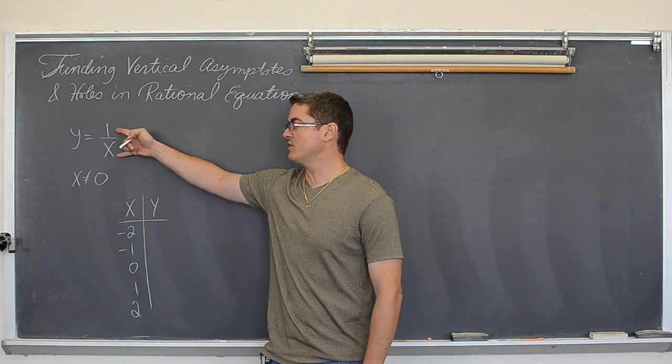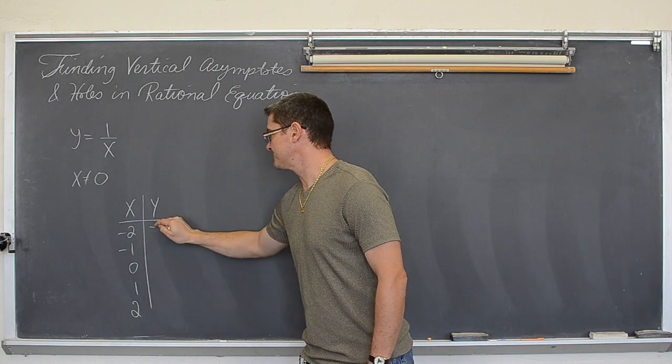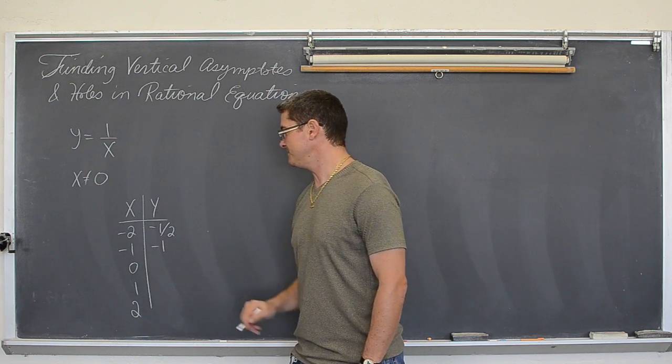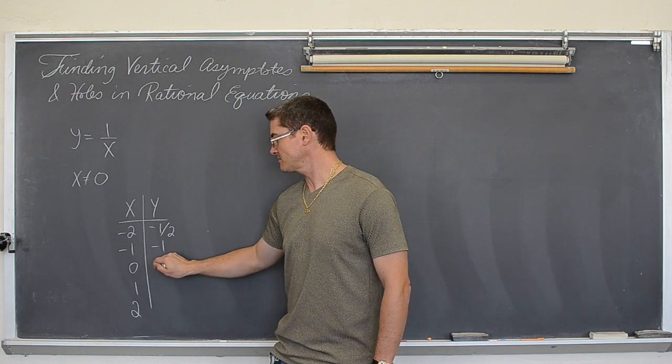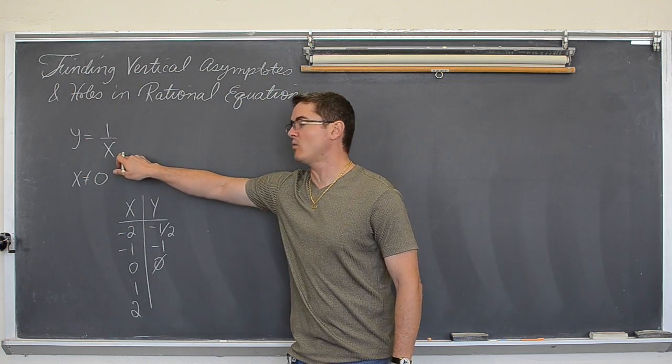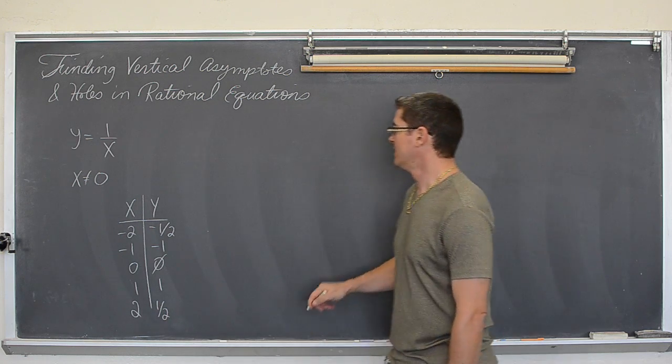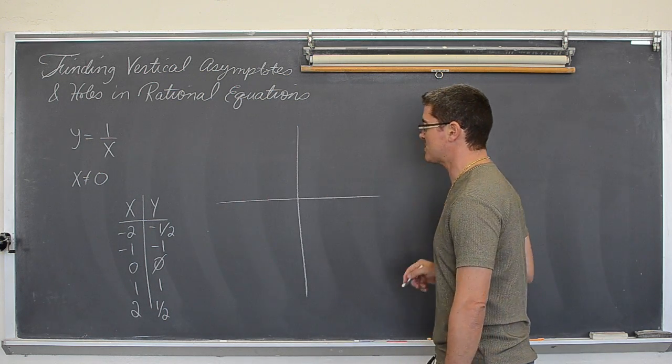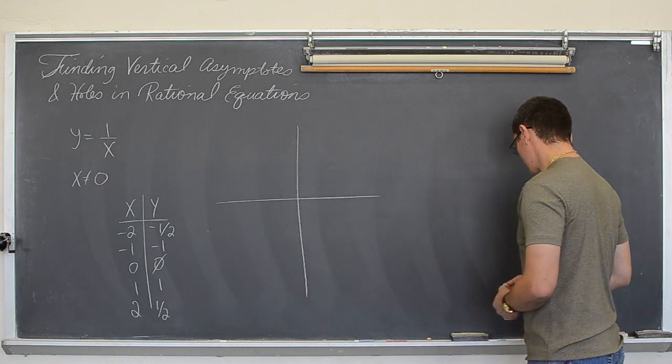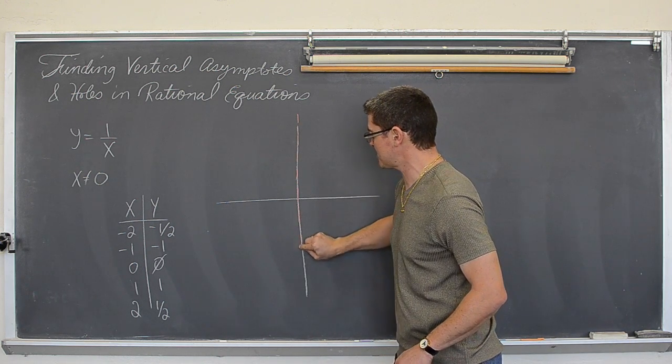Let's just plug those in. If you plug in negative two, you get a y value of negative one half. If you plug in negative one, one divided by negative one is negative one. I included zero, but we already know that that's undefined. So that just simply doesn't work. We have the value of one. One divided by one is one. One divided by two is one half. This graph will have a vertical asymptote at x equals zero.